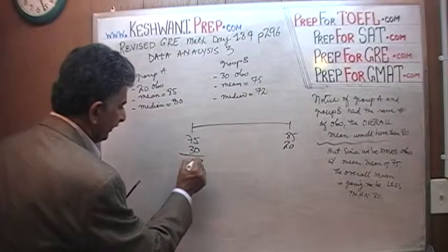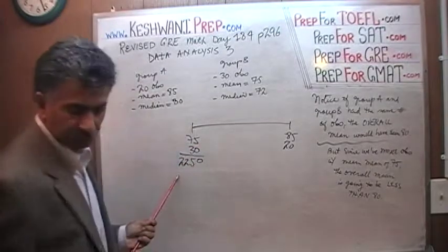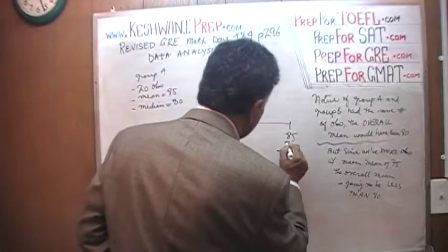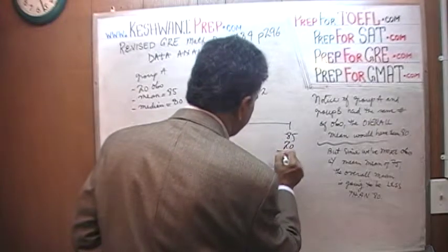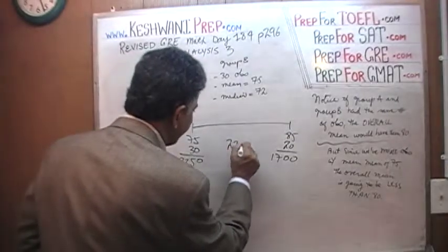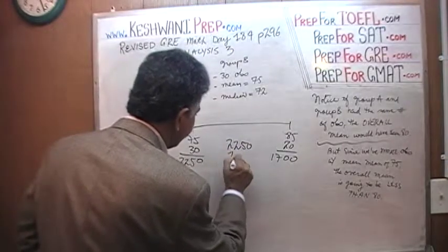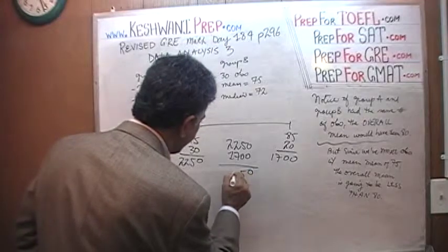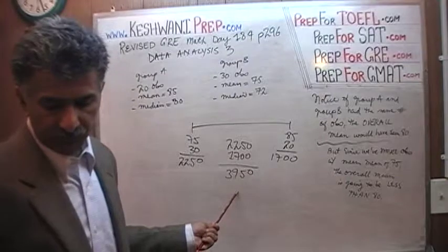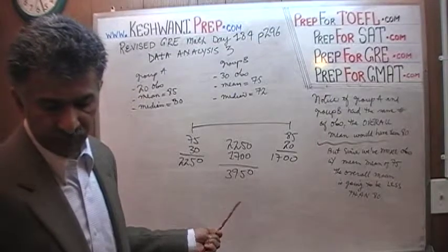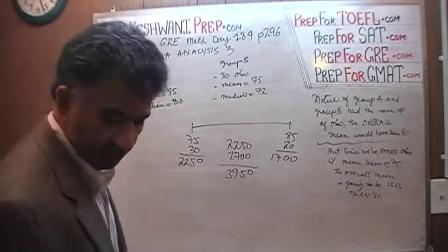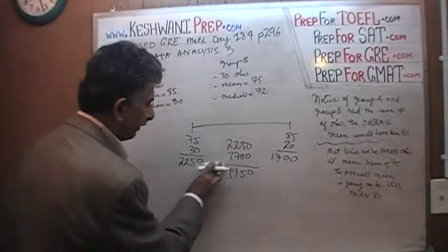75 times 30: 3 times 5 is 15, carry 1, giving 21 and 22 — so that's 2,250. And 85 times 20: 2 times 5 is 10, carry 1, giving 16 and 17 — so that's 1,700. So we have 2,250 plus 1,700 equals 3,950. We have to divide this total score of 3,950 by the total number of observations, which is 50. So let's divide 3,950 by 50.